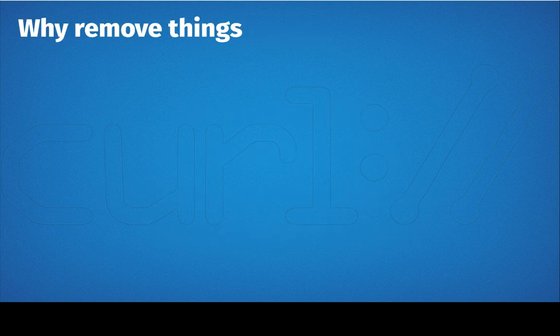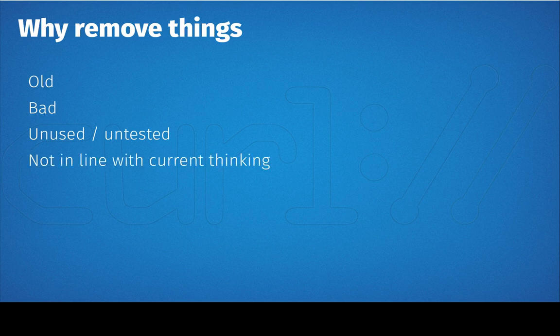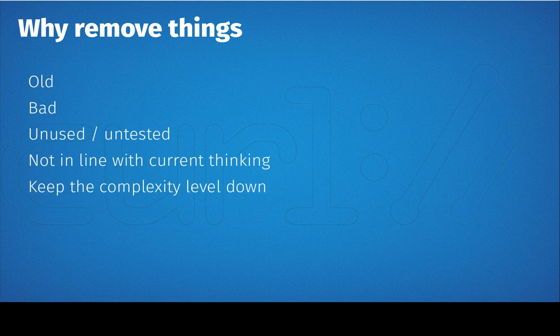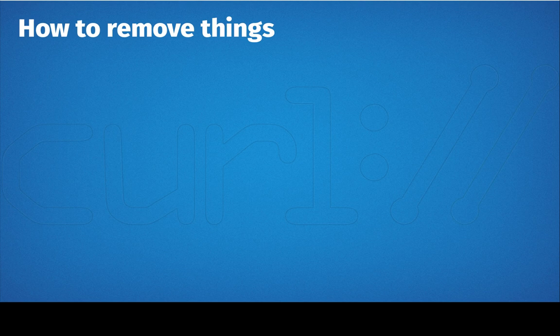Why do we need to remove things? We have a lot of old and bad things that we possibly don't want to keep in the codebase anymore. Some of it is unused, some of it is basically untested and not in line with current thinking. We remove features that aren't working well and aren't used much, and we want to encourage people to use third-party libraries. Also, we keep the complexity down — we add code all the time, so we better remove some code as well.